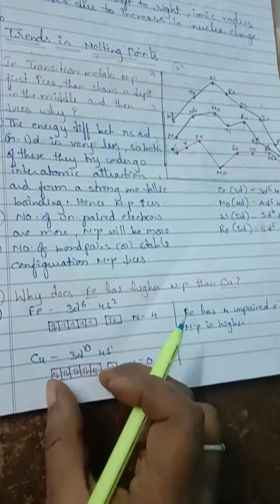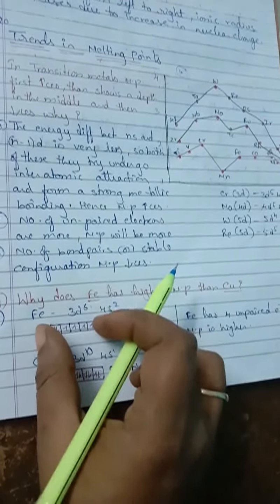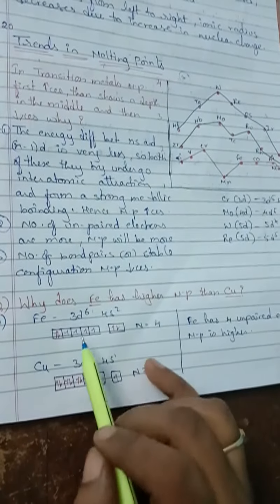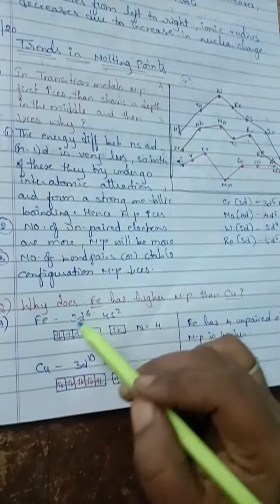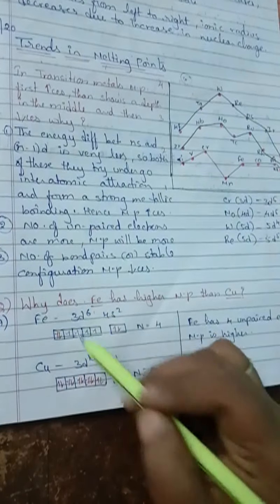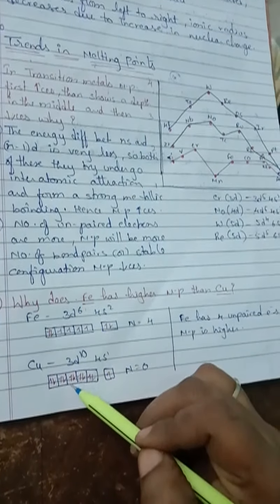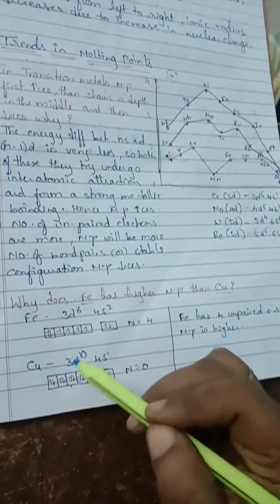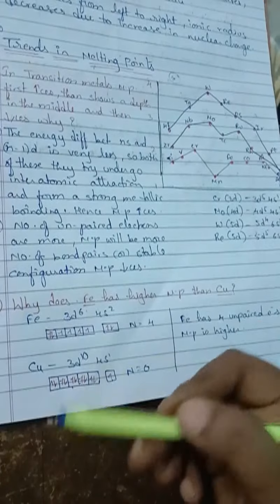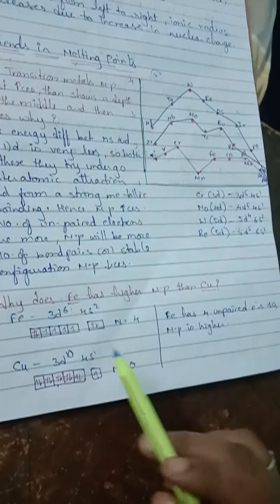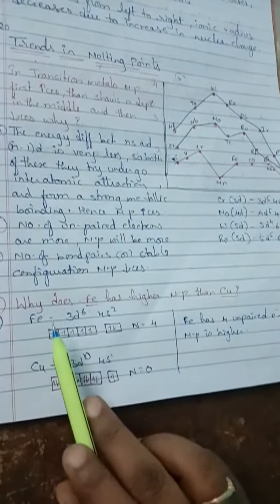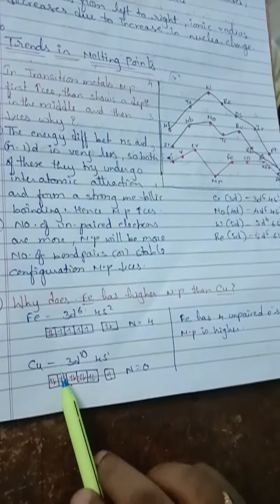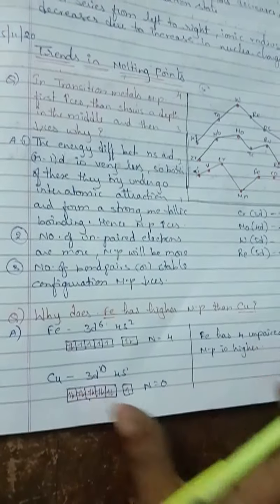In 3D, copper is completely filled, while iron has 4 unpaired electrons. The number of unpaired electrons is more in iron than in copper. As iron has more unpaired electrons, its melting point will be higher than copper's. This is the second concept.